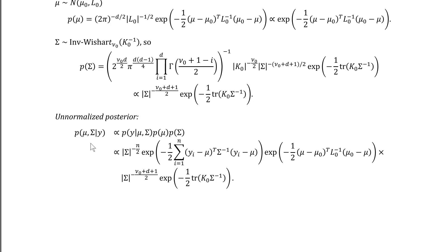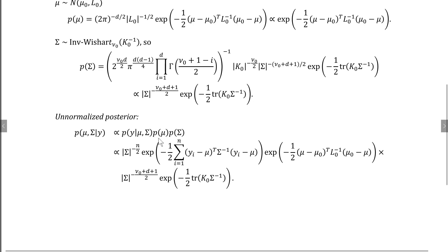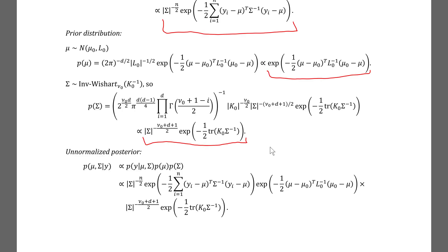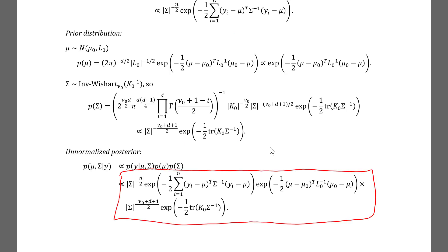We now go through the process of determining the unnormalized posterior density. The posterior density is proportional to the product of the data density, the prior density for mu, and the prior density for sigma. Taking the relevant portions of our previous derivations, the joint posterior density is proportional to this product.